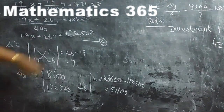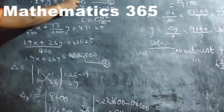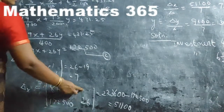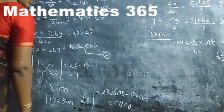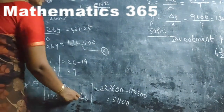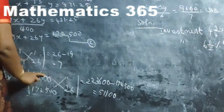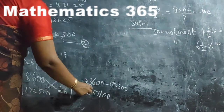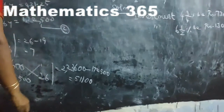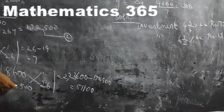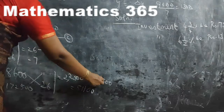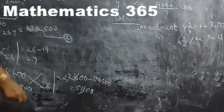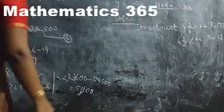For Delta X: replace the X column with constants 8600 and 172500. Using left diagonal minus right diagonal: 8600 times 26 equals 223600, minus 172500 times 1 equals 172500, giving 223600 minus 172500 equals 51100.